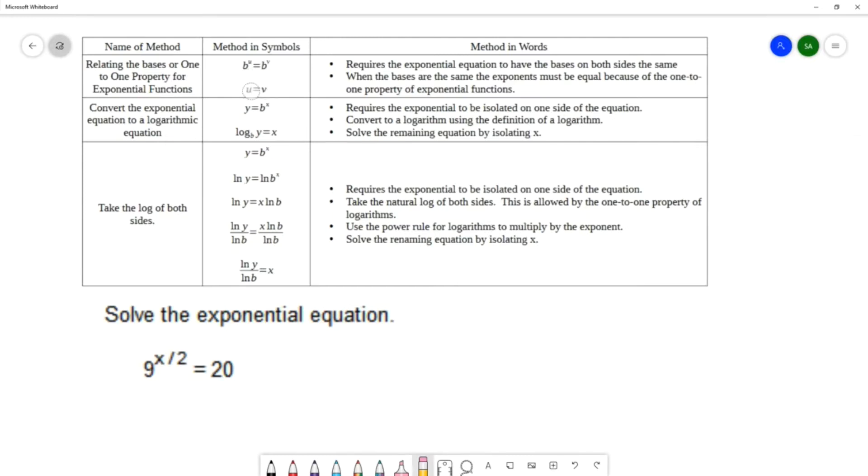So that you can use that one-to-one property and say that the exponents are equal to each other. If you look at the bases in our example, we have a base 9 and 9 is the same thing as 3 squared, so you could change that to a 3.